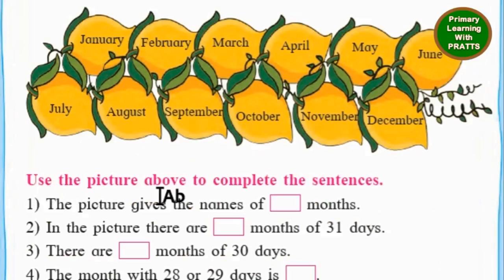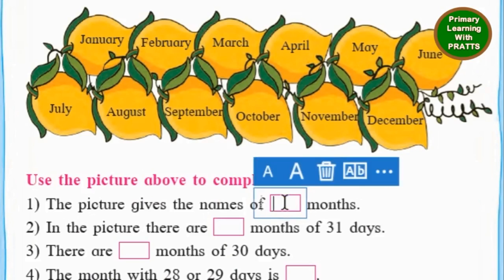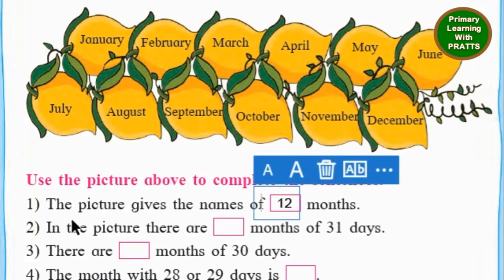Use the picture above to complete the sentences. First one: the picture gives the names of how many months? 12 months. So we will write 12. The picture gives the names of 12 months.